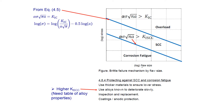Section 4.8.4 covers protection against brittle failure. One option is using thicker materials to ensure lower stress, reducing both overload risk and crack growth rate per cycle in equation 4.6. We can also use materials with tested slow deterioration — high chromium alloys, for example, as found in tables. Inspection and replacement of bridge components is important, as is considering coatings or anodic protection. The steel cables of the Brooklyn Bridge, for instance, are well coated with zinc-containing paint.